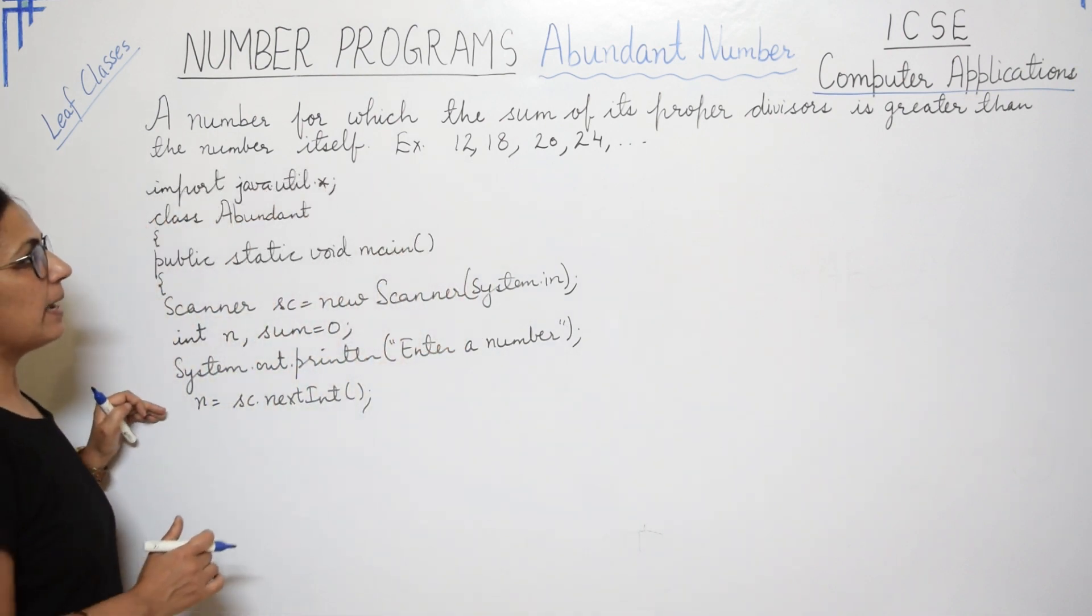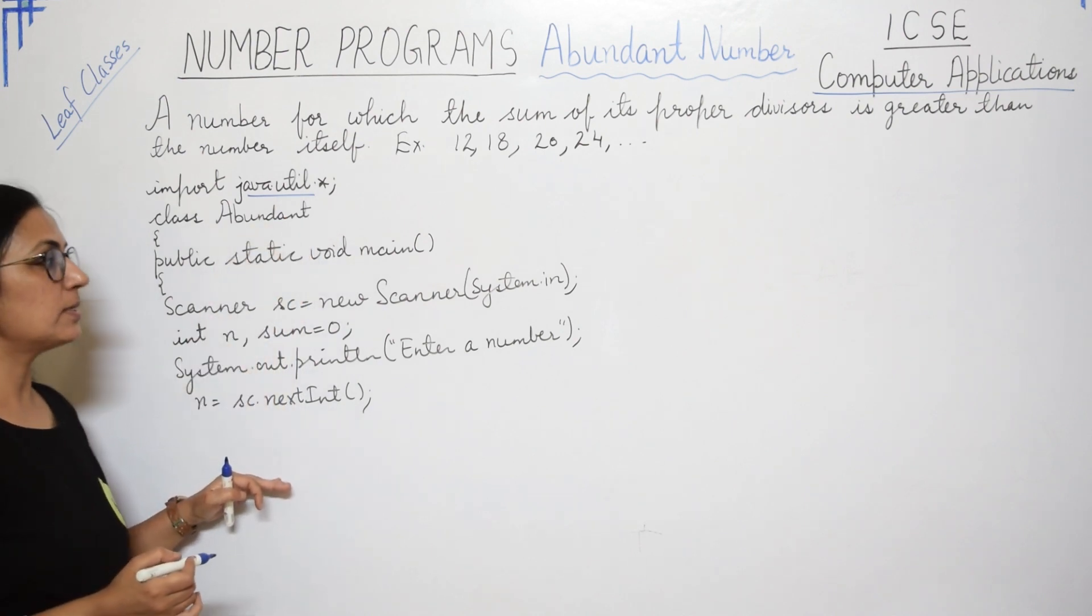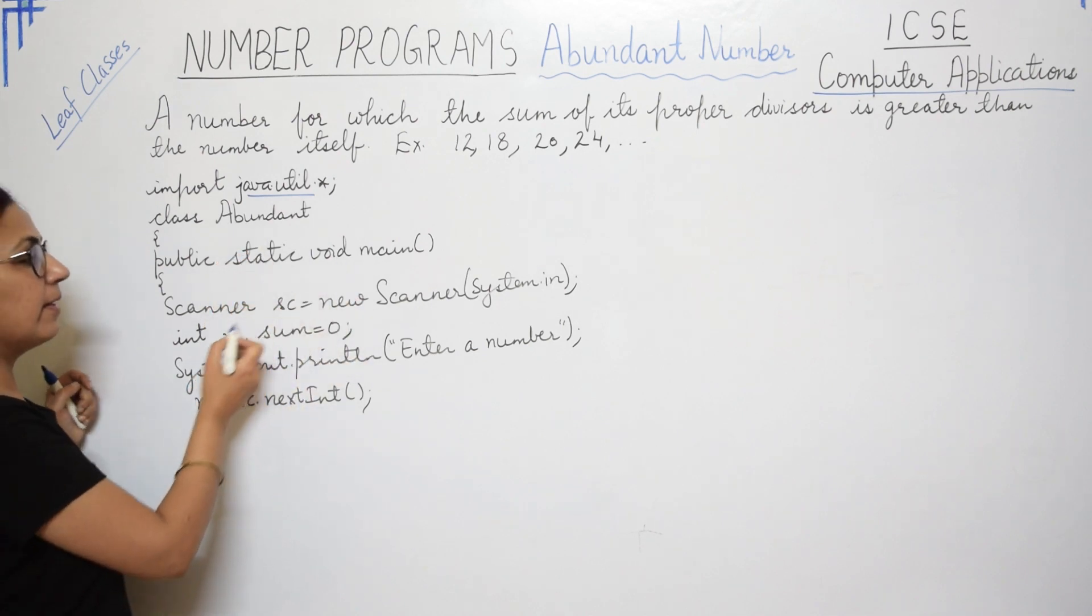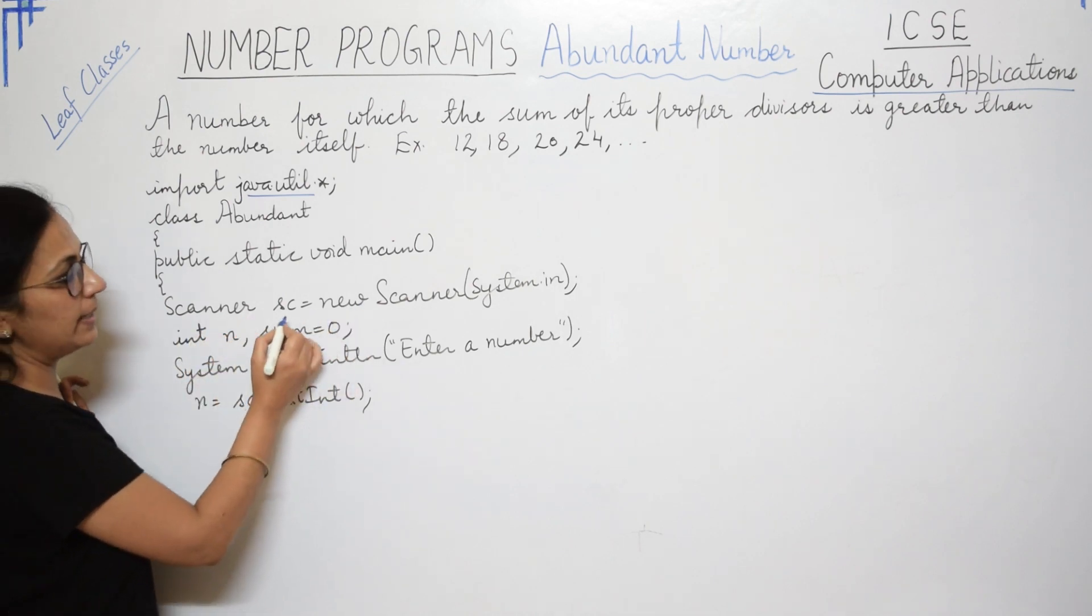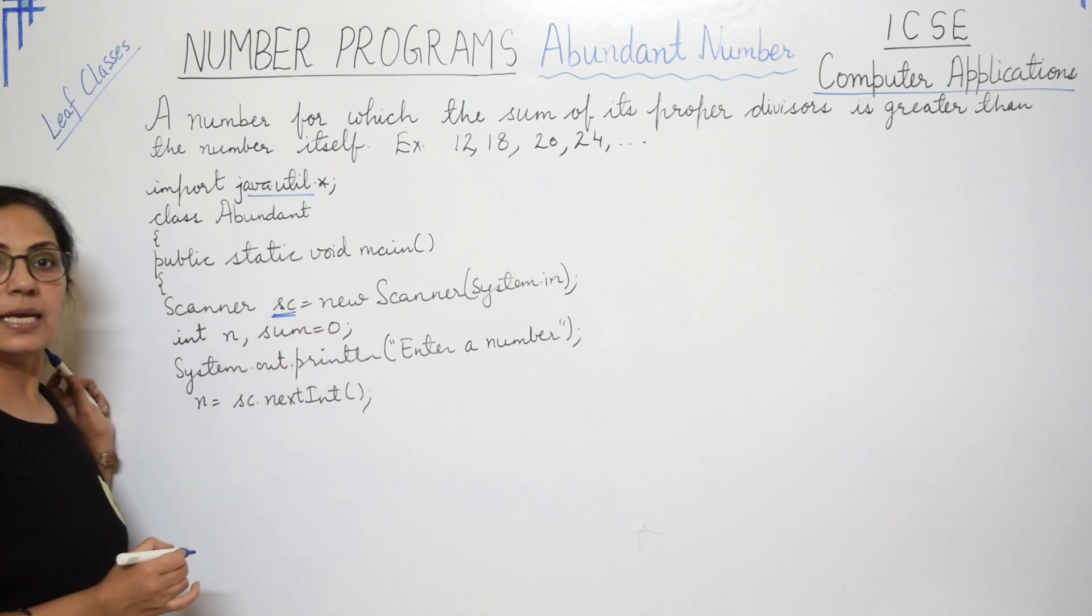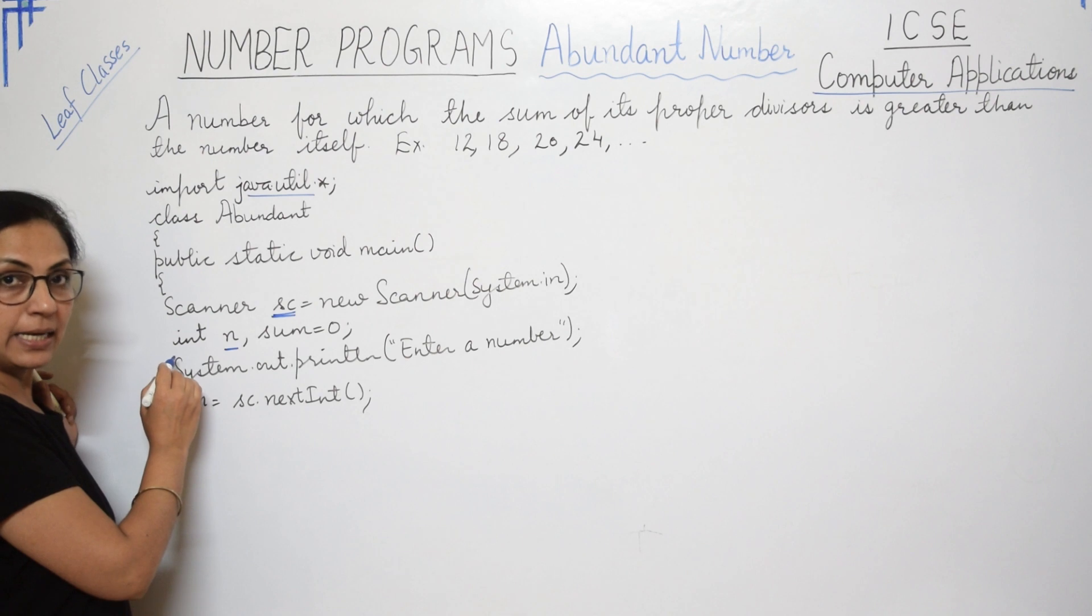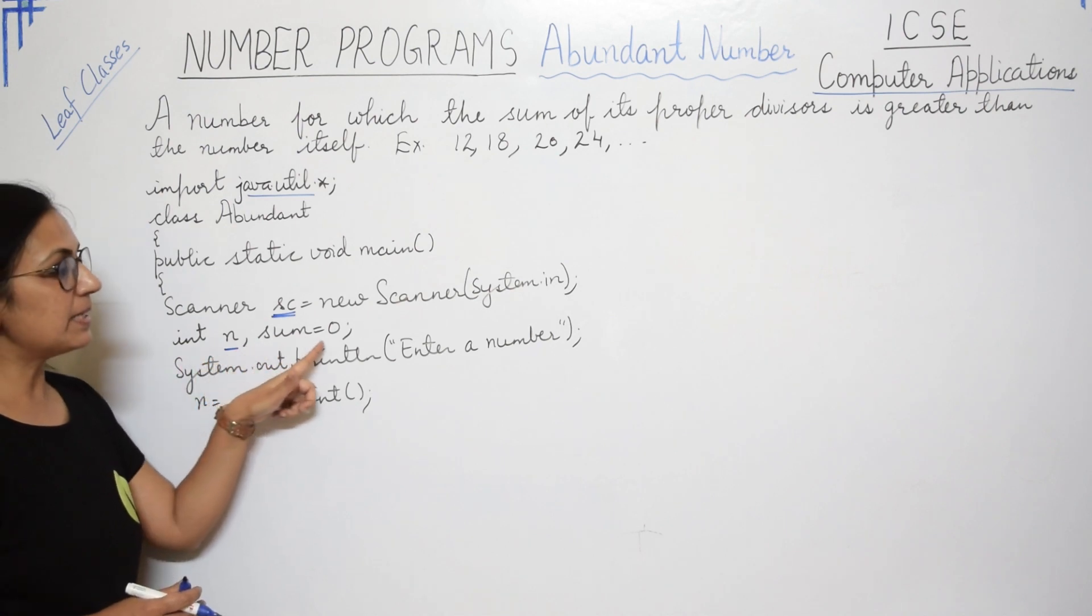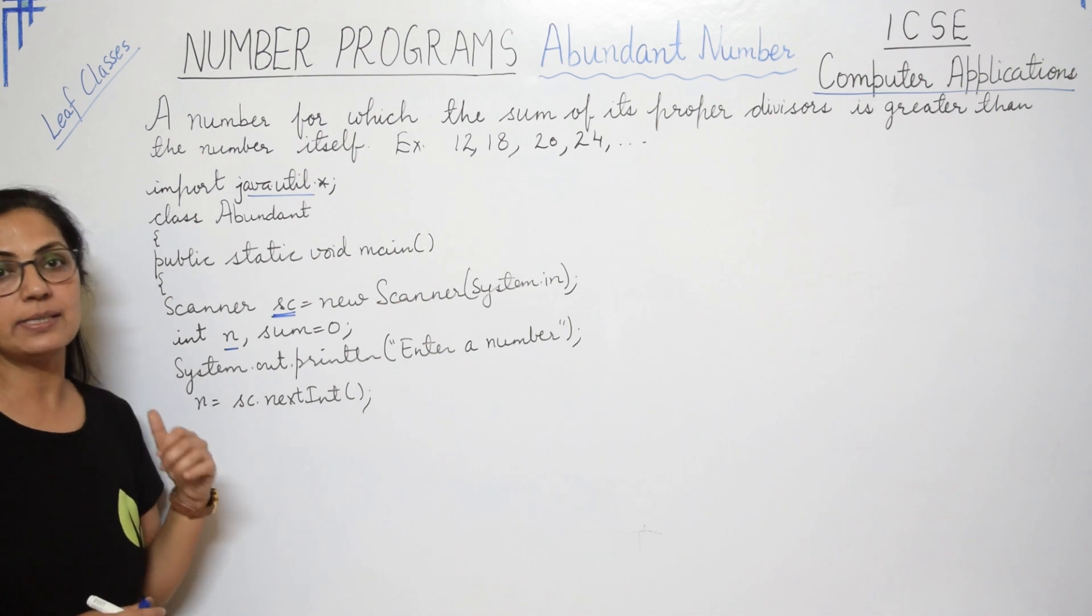Since we have to input the number, I have used here java.util package. Because we want to use scanner class functions. And we have taken the class. We have taken main function. Then the first thing which we have to do is to create the scanner object. Scanner sc equals to new scanner system.in. Children this sc is the object name. You can take any name of your choice.